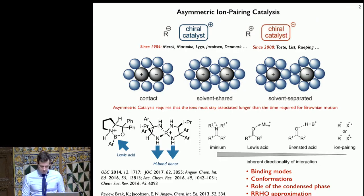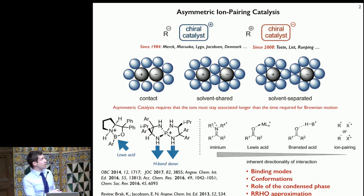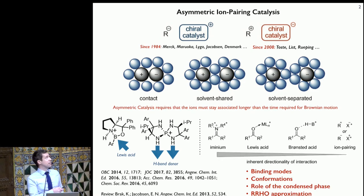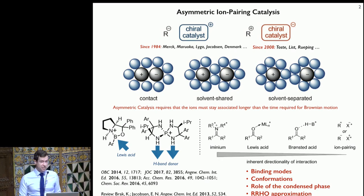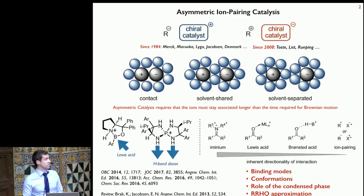To give you some background: if we have an intermediate — let's say an achiral intermediate, R-minus, an anion in solution — it's been shown going back to the 1980s, in chemistry originally developed industrially to make pharmaceuticals, that the use of a counter-ion with the opposite charge and chirality induces selectivity in a number of chemical transformations by the property of ion pairing, forcing certain conformations and configurations to be adopted.